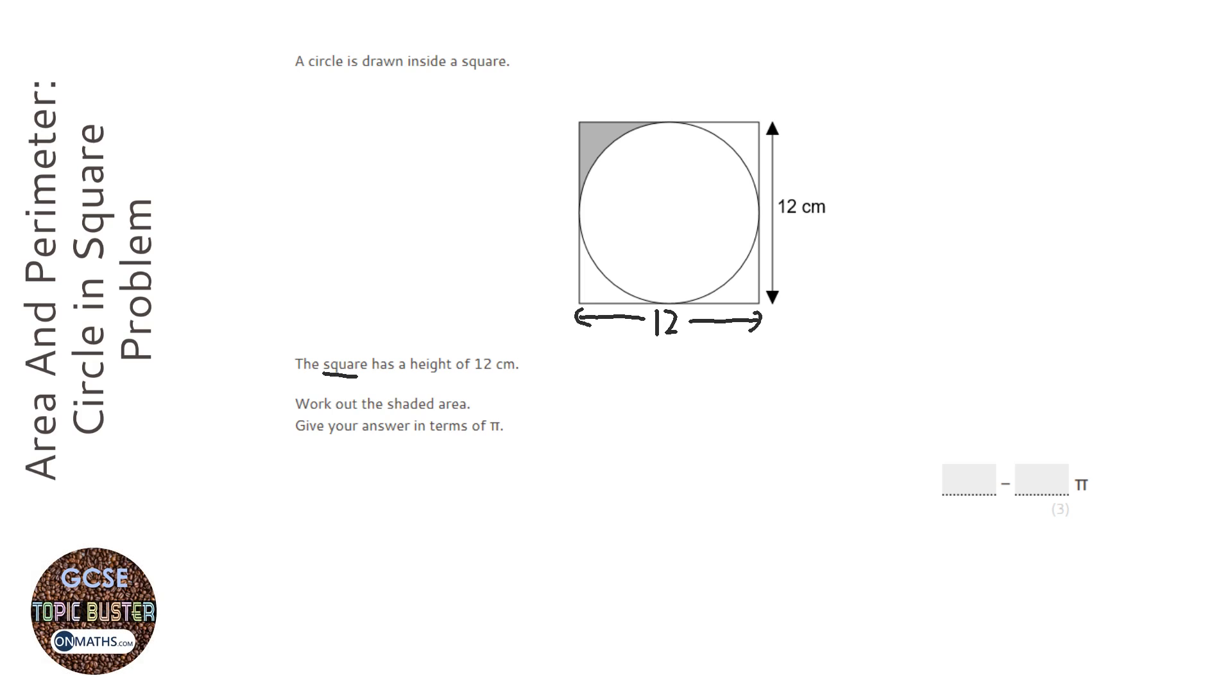Be careful to look out for that. Whenever you've got a square, they might only give you one of the dimensions. They won't always say it's a 12 by 12 square. So you've always got to know that the other side is going to be the same. Let's work out the shaded area.